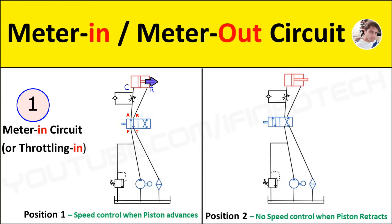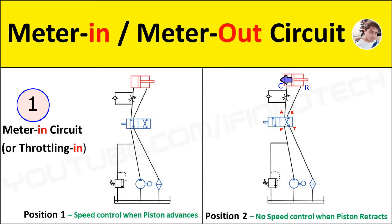Hence the piston extends slowly. In the second position of the 4/2 direction control valve, oil under pressure flows from port P to B and port A to T. This flow is through the check valve — this is free flow — hence the piston retracts at higher speed, which is not controlled. Meter-in control is used for opposing loads only. It cannot prevent running-away loads because the return line from the cylinder is a free path towards the reservoir. A running-away load will pull the piston and the piston cannot restrict that.